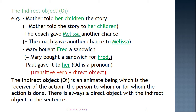Mother told her children the story. The mother in this sentence told the story to someone. The one who receives the action of telling the story is her children — this is called the indirect object. The indirect object (OI) is an animate being, meaning a human being or an animal, which is the receiver of the action — in other words, the person to whom or for whom the action is done.